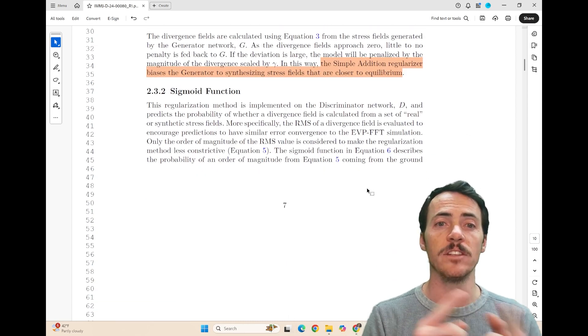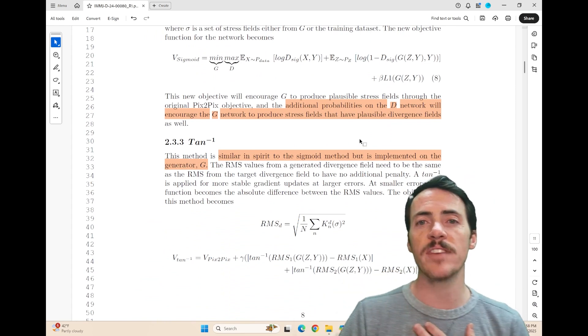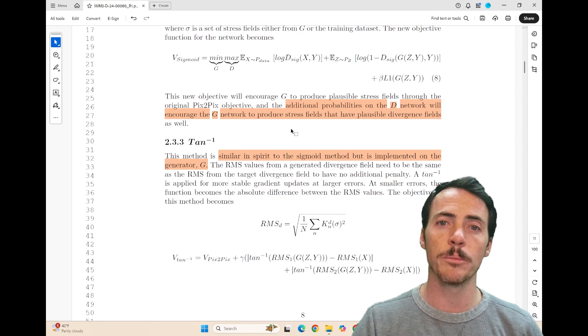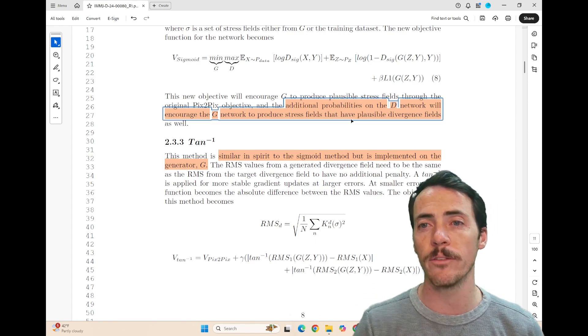Or they can try it with a sigmoid function. This is now going to be implemented in the discriminator, and they point out that this adds additional probabilities on the discriminator network that will encourage the generator network to produce stress fields that have plausible divergence fields.